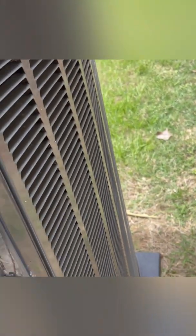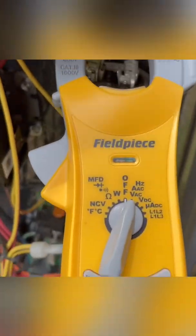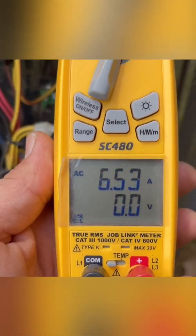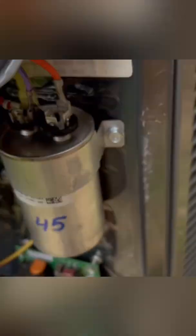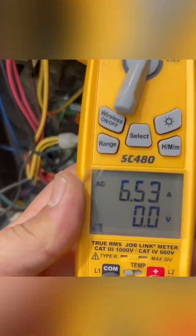Hey guys, going to show you real quick how to check a capacitor under load or while it's running. You're going to get your clamp meter, set it on amps, go around to the Herm wire right there, clamp it, and get your reading. 6.54 is going to be our amp reading.